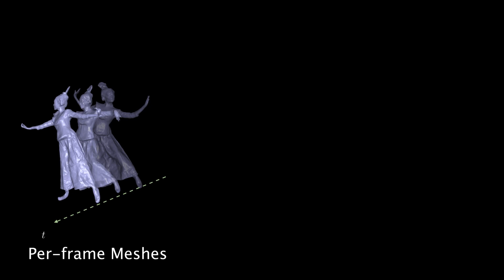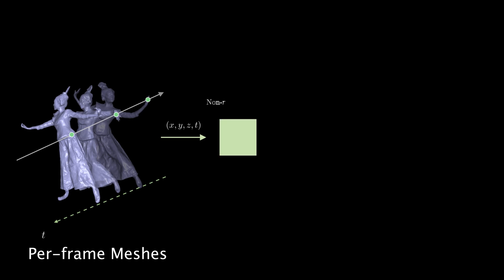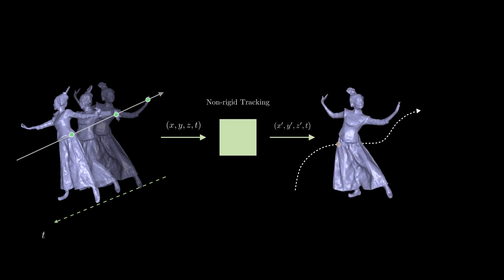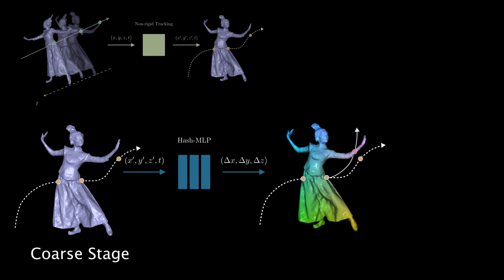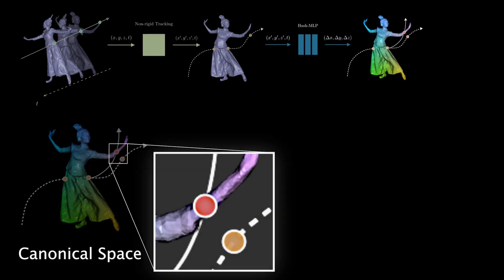For further data compression and enabling temporal editing effects, we propose a neural tracking pipeline. In the coarse stage, we adopt traditional non-rigid tracking to establish the coarse correspondences. We deploy a neural scheme called DeformNet to refine the motion results from the coarse non-rigid tracking, obtaining more accurate tracked motion.